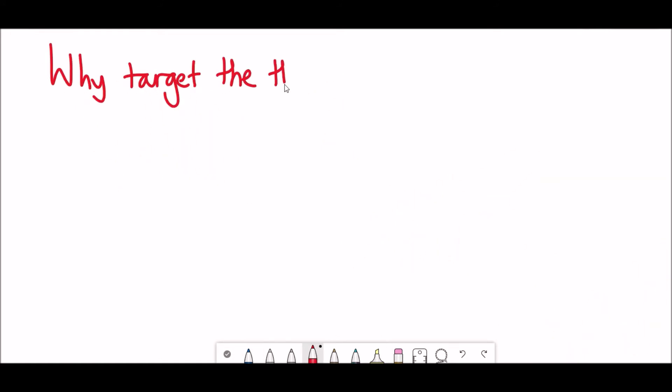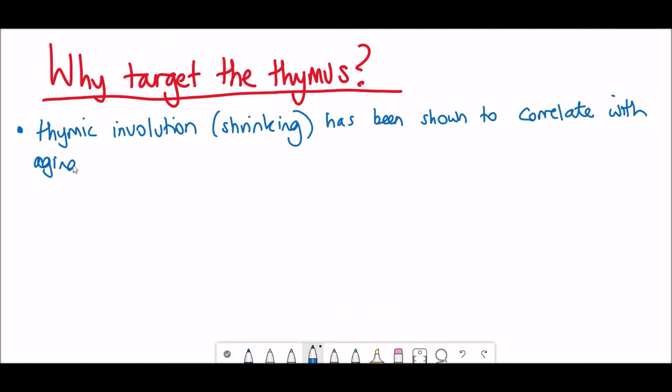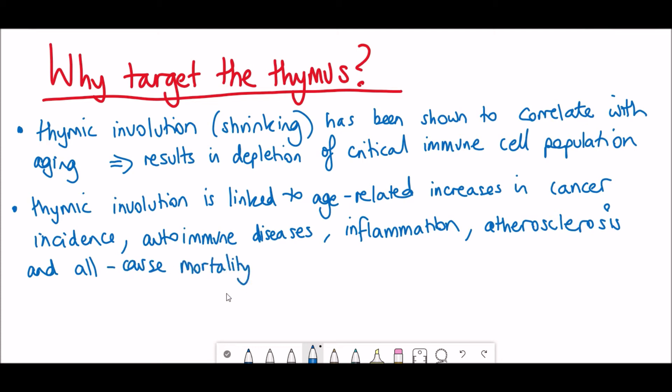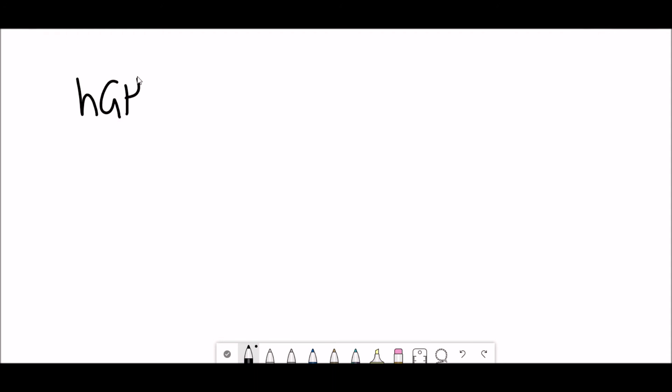So why the thymus? One of the characteristics of the aging process seems to be thymic involution, literally shrinking of the thymus, and this has the consequences of reducing the immune cell population. So thymic involution is linked to age-related increases in cancer incidence, autoimmune diseases, inflammation, atherosclerosis, and all-cause mortality. It's even been seen that centenarians have maintained immune function, so by targeting the thymus it seems possible that you could prevent or slow down the aging process.